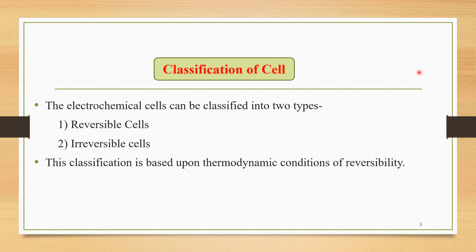In this lecture, we have to look towards the classification of cells. How the cell is classified? The electrochemical cells can be classified into two types: one is Reversible Cells and second is Irreversible Cells. This is a classification of these cells depending upon their working.